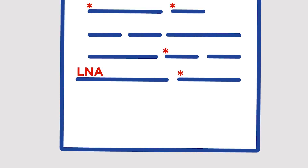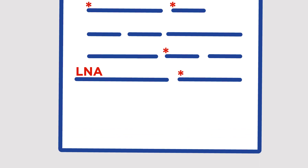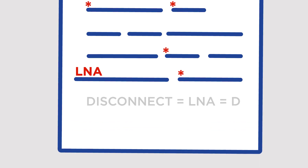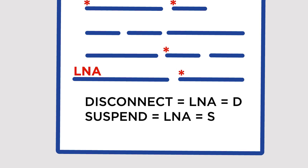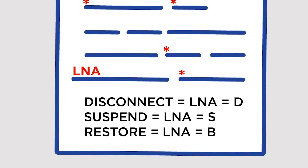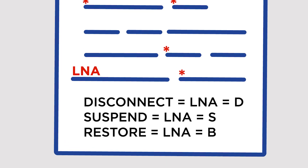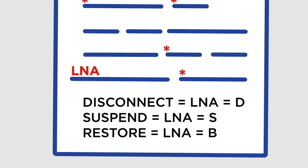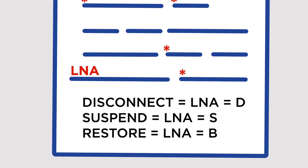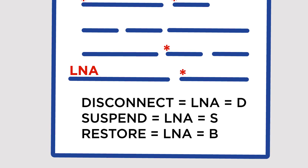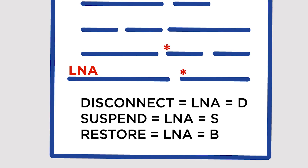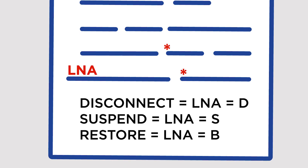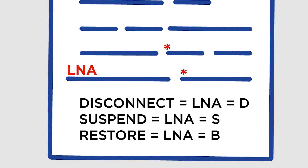Once initiated, fill in the order like you would any other except for the RS range. Here's some good news: you don't need any codes for a disconnect, suspend, or restore. Just populate the page down to the LNA, or Line Activity, field. You'll want to use an LNA that matches your activity type, whether that is D, S, or B.